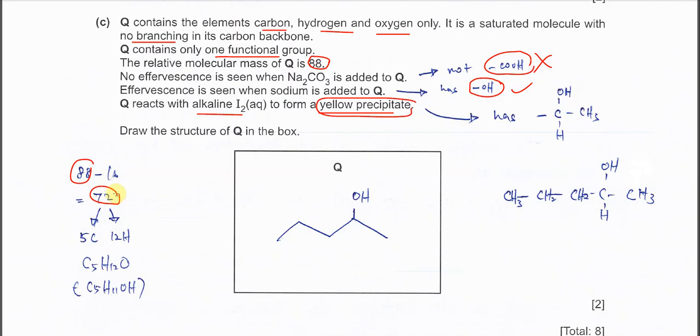So the maximum carbon number that it could be is 5. 5 times 12 is 60. So the remaining is 12, so it's 12 hydrogen.